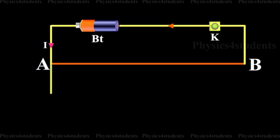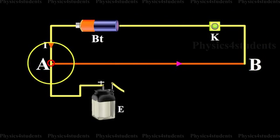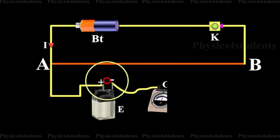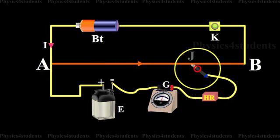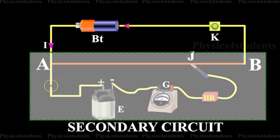A primary cell is connected in series with the positive terminal A of the potentiometer, a galvanometer, high resistance, and jockey. This forms the secondary circuit.